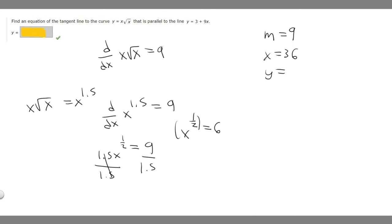What we want to do is just take our x value, which is 36, and plug it into our function. So we have 36 times the square root of 36, which is 6. And so that's going to be 216.